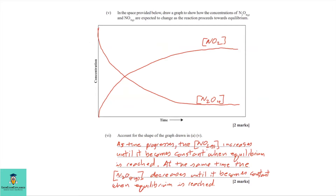Part five: draw a graph showing how the concentrations of N2O4 gas and NO2 gas change as the reaction proceeds towards equilibrium. Looking at the graph, NO2 is being formed while N2O4 is being used up. The concentration of N2O4 (the reactant) decreases, while the concentration of NO2 (the product) increases. Both lines plateau to show that equilibrium has been reached.